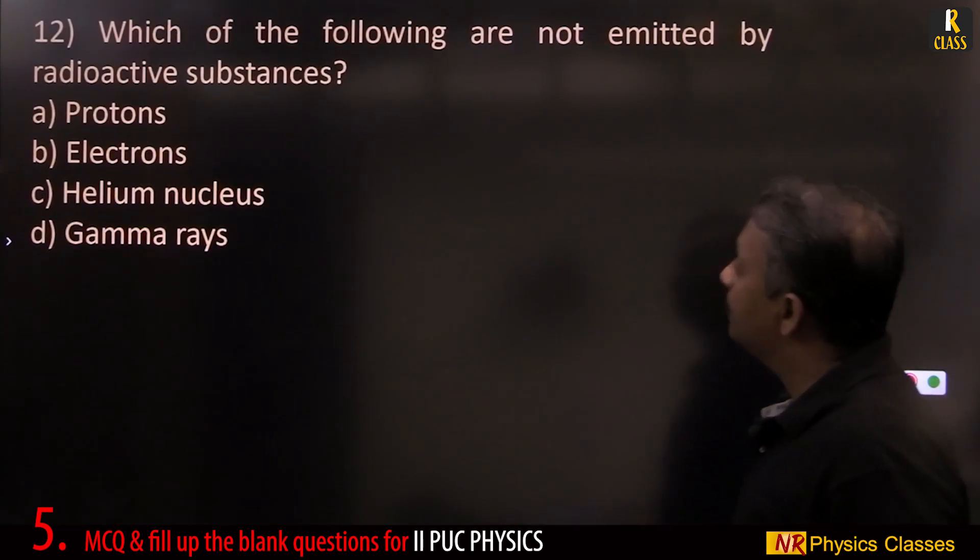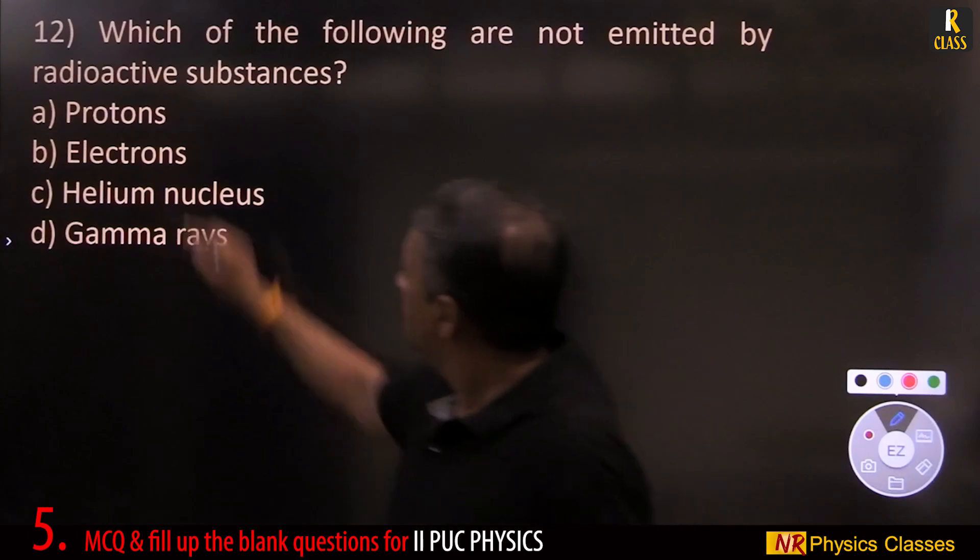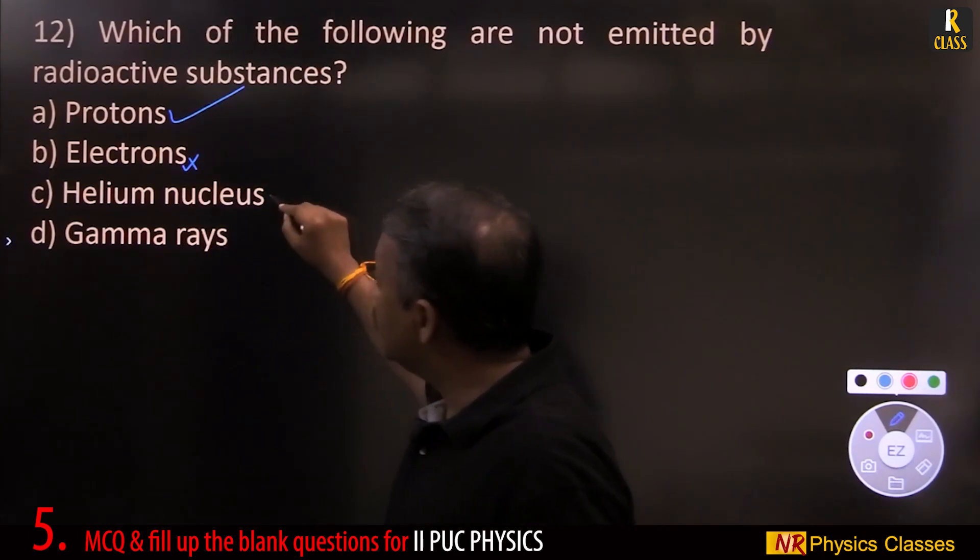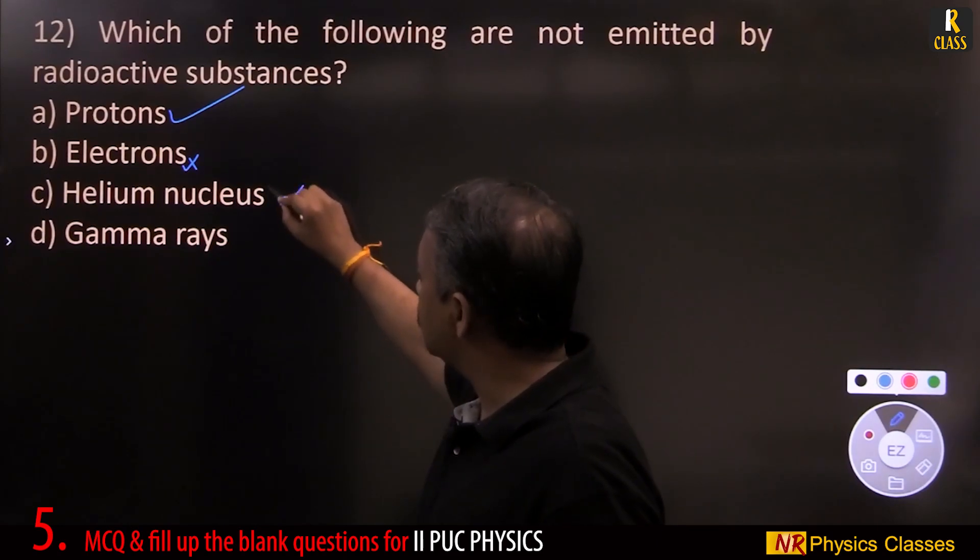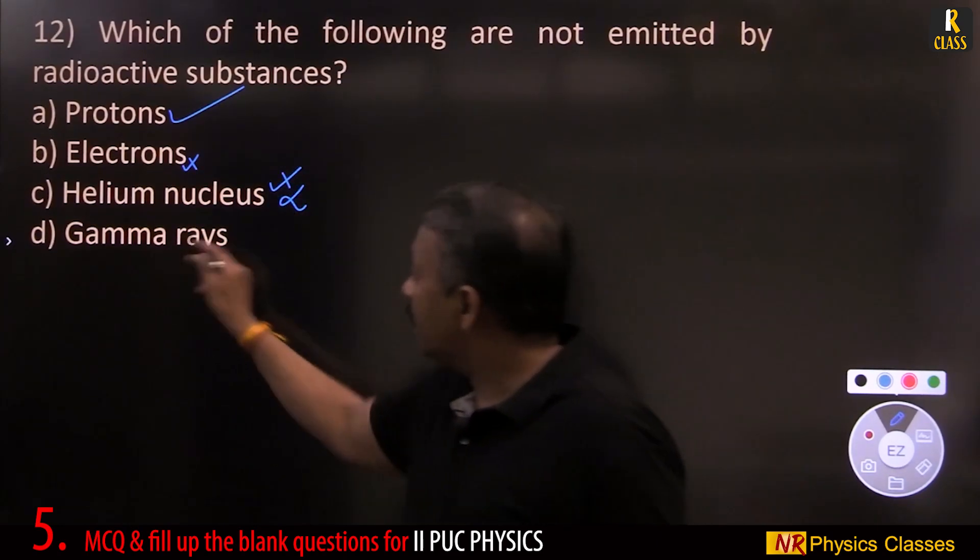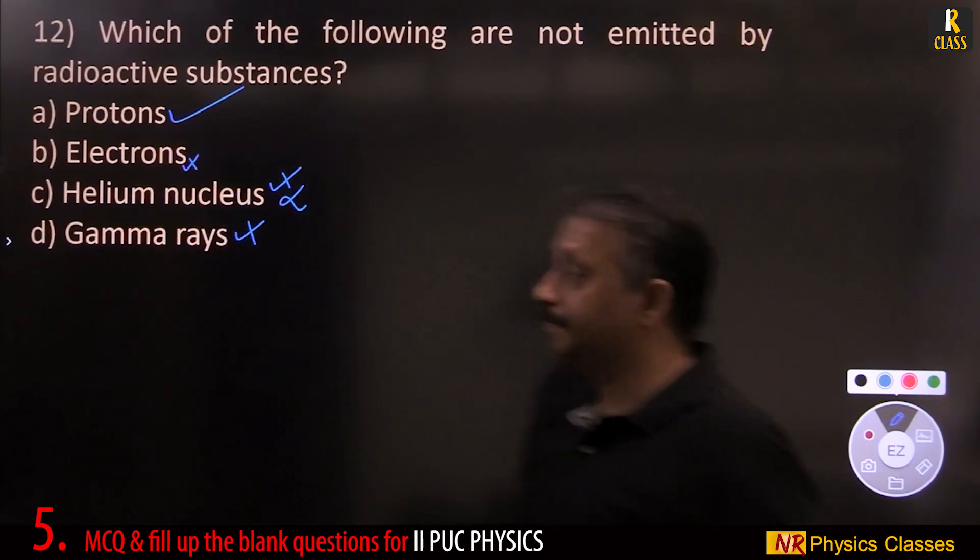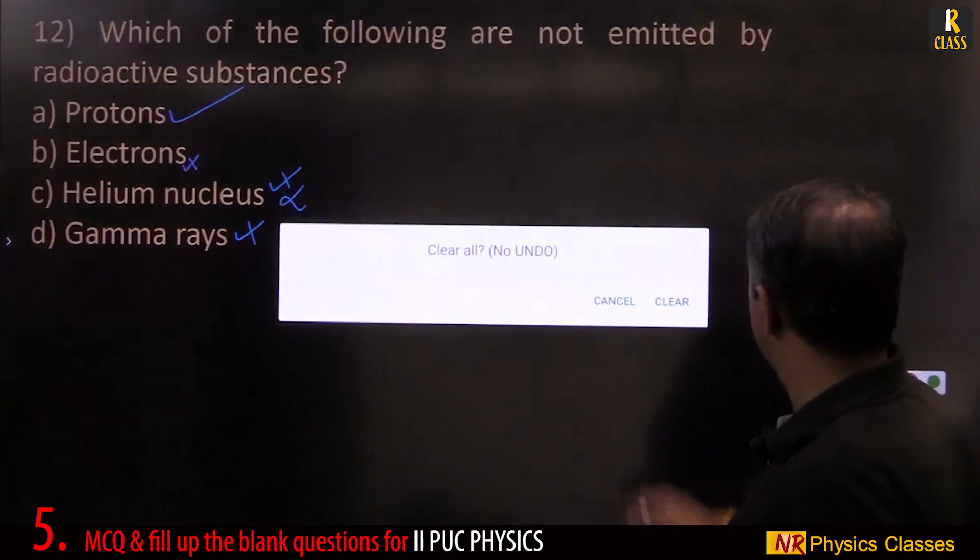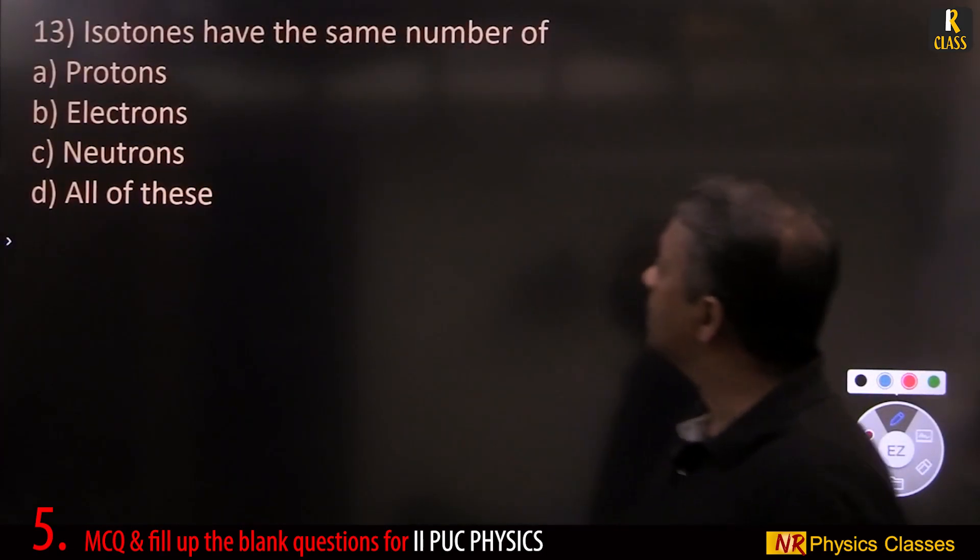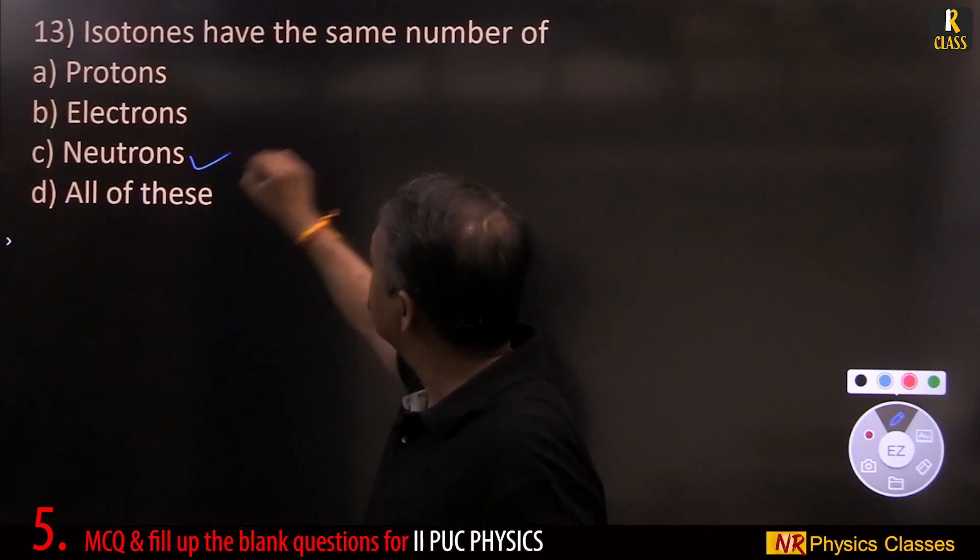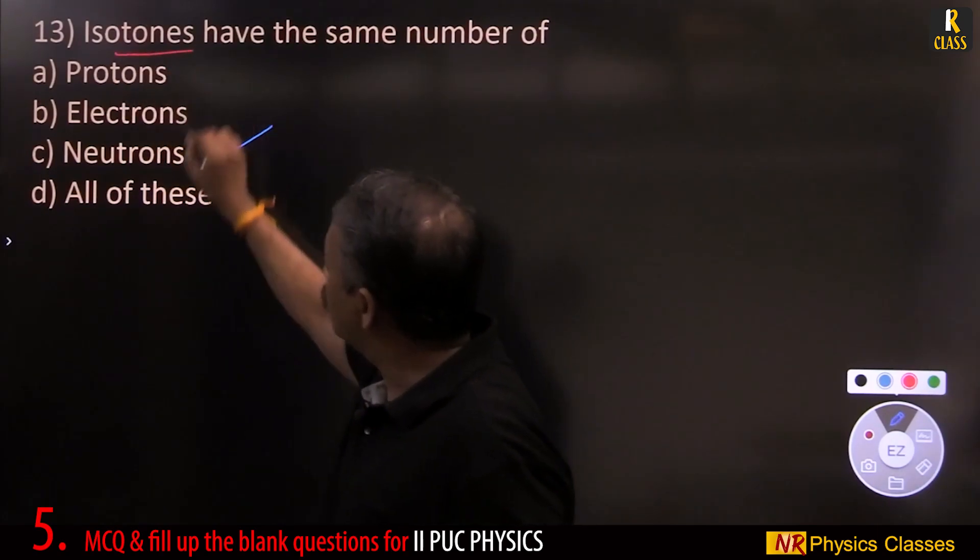Which of the following are not emitted by radioactive substances? Protons are not emitted. Electrons are emitted. Helium nucleus means alpha particles are emitted. Gamma rays are emitted. So, protons are not emitted. Isotons have the same number of neutrons.